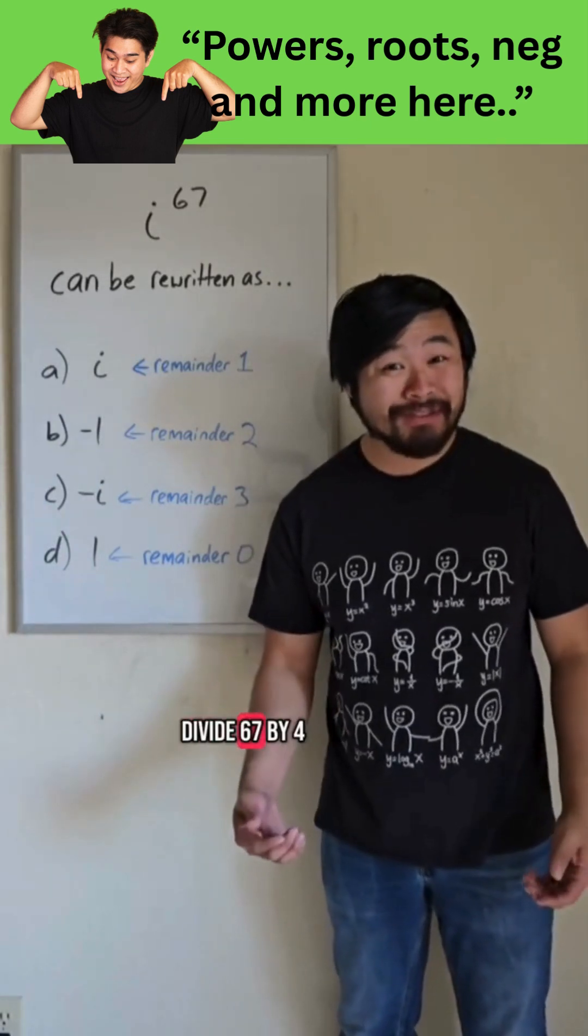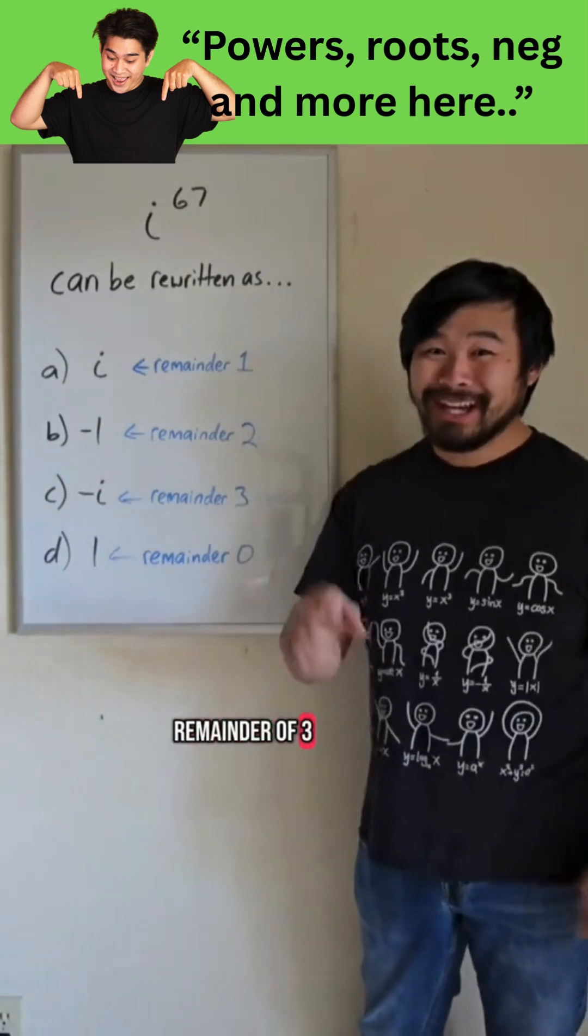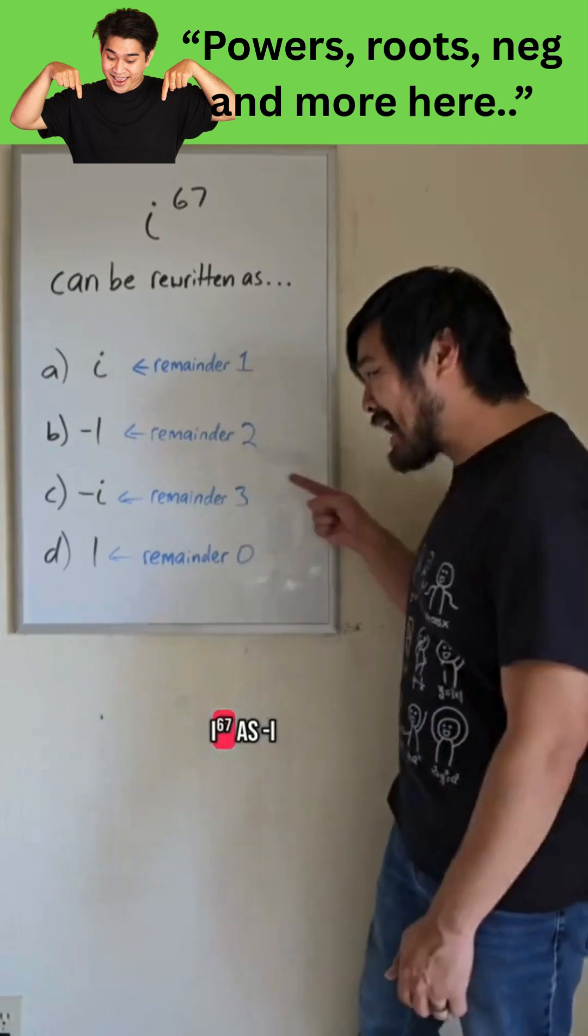So because when we divide 67 by 4, we get a remainder of 3, we can rewrite i to the 67th as negative i.